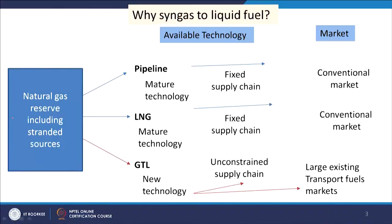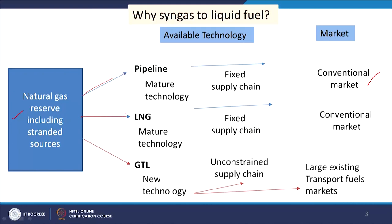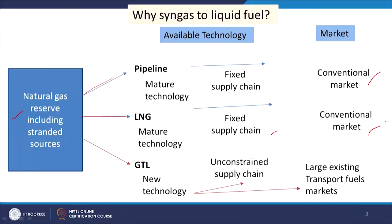Natural gas is available in nature. From this reserve, it can go through the pipeline and then be used in different applications, particularly for heat application. It can go to the conventional market, or it can be liquefied as LNG, and then also we have some supply chain arrangement already existing. So these are the two conventional routes. But if we go through the third route, that is the GTL route, this is a new technology and here we get access to a large existing transport fuels market, and we can get chemicals also.